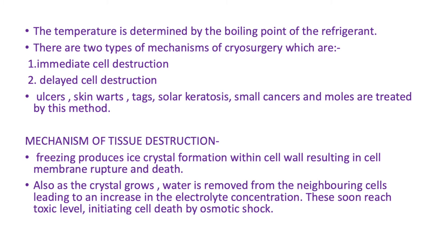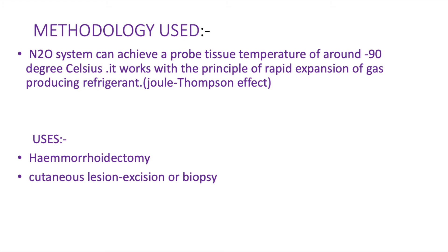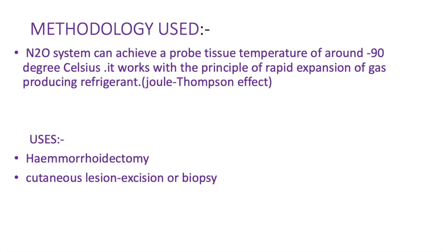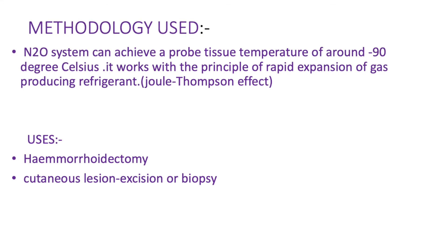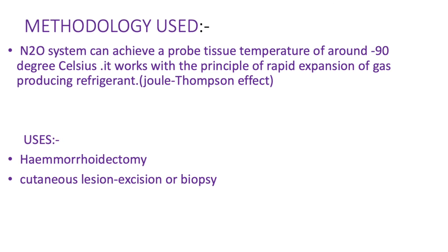These electrolytes soon reach toxic levels, initiating cell death by osmotic shock. The nitrous oxide system can achieve a probe tissue temperature of around minus 90 degree Celsius. It works with the principle of rapid expansion of gas producing refrigeration.